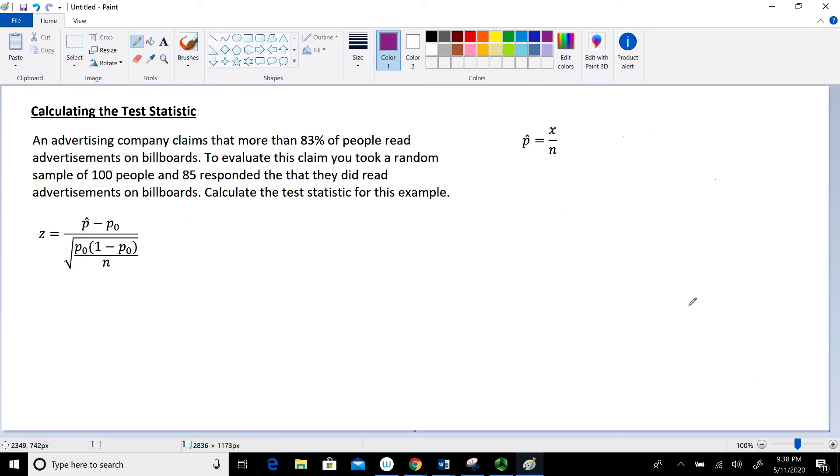Just to recall what that is, we have our null hypothesis, H sub 0, which is going to deal with our population proportion P. And then we have our alternative hypothesis, H sub A, which is also going to deal with our population proportion P.